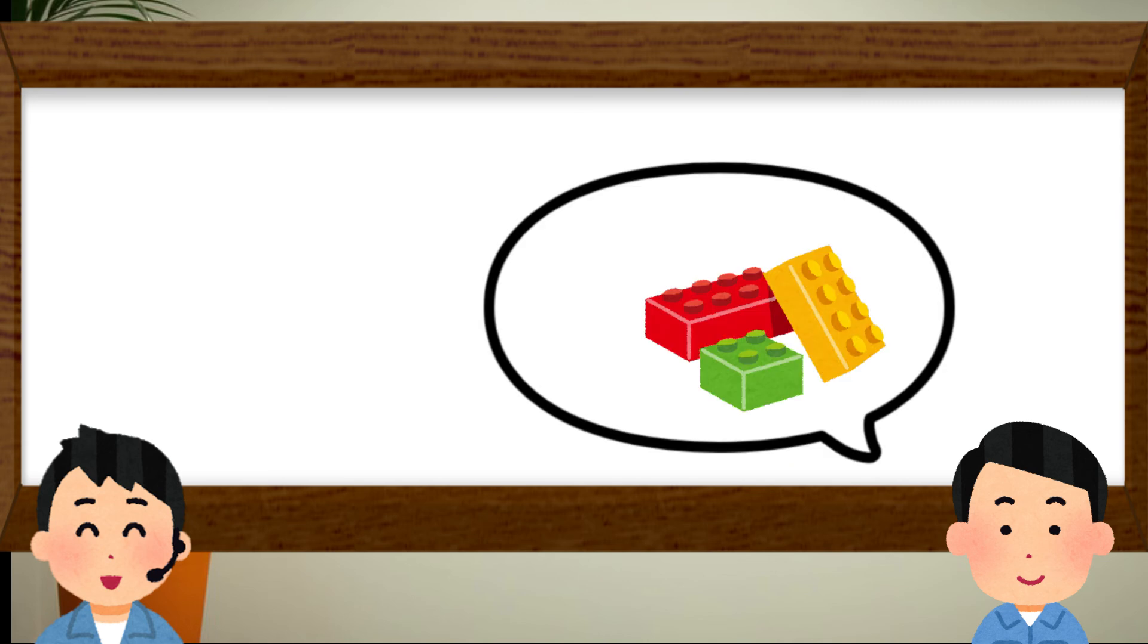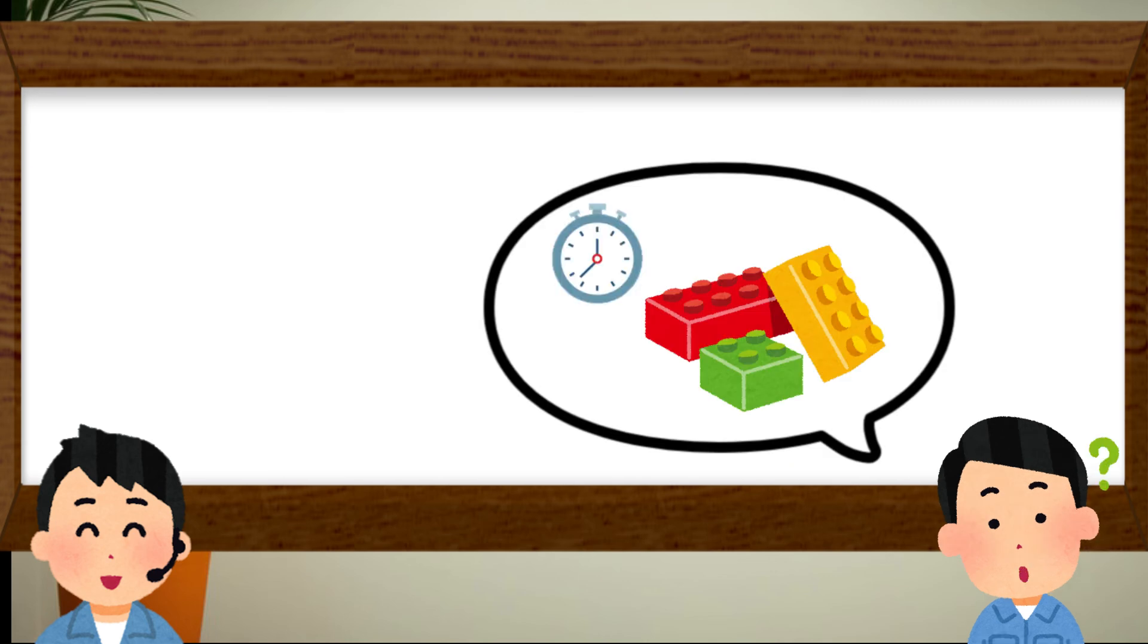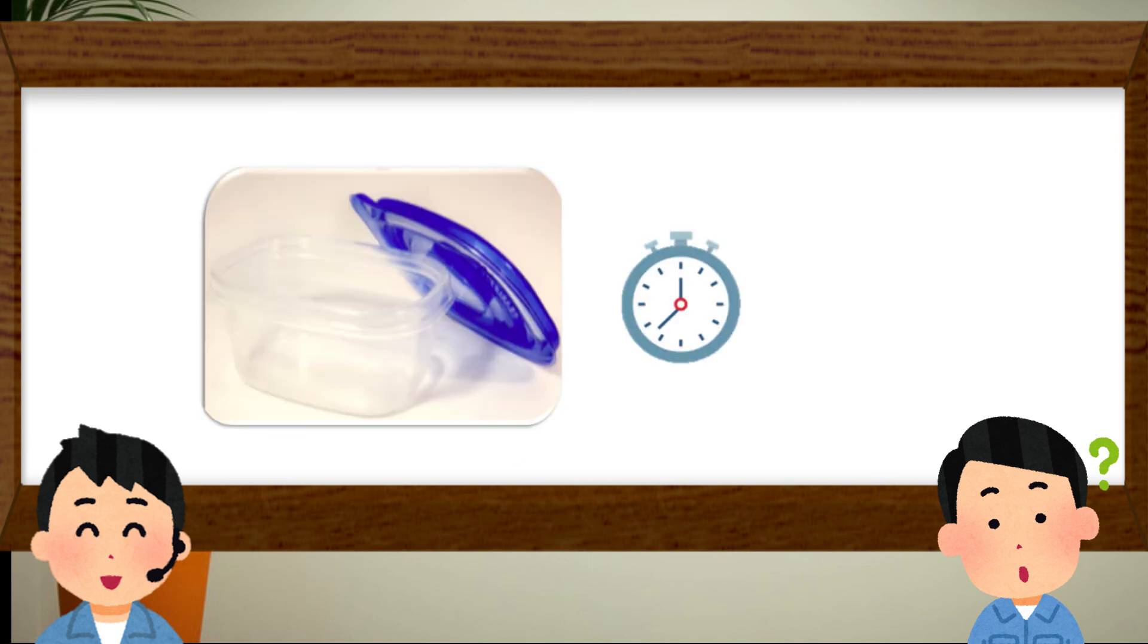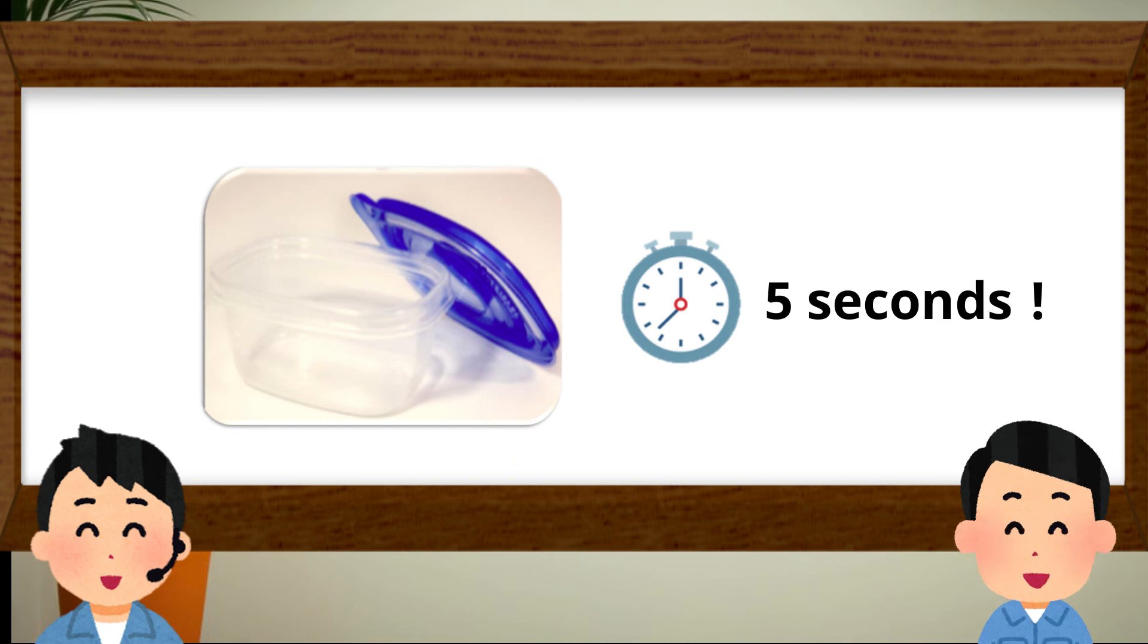By the way, how long does it take to make a plastic product? It's up to material and product, but for example, the cycle time for polypropylene packaging molding is around 5 seconds. Wow! Only 5 seconds! It's fast! Yes, as I told you, we can say that injection molding is perfect method for making same products in a short time.